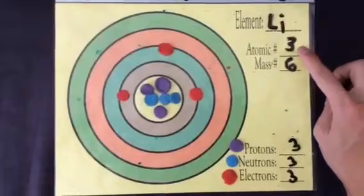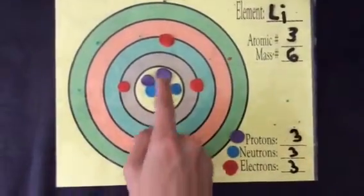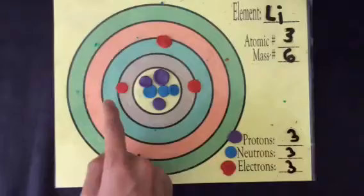Lithium-6 has an atomic number of 3, mass of 6, 3 protons, 3 neutrons, and 3 electrons.